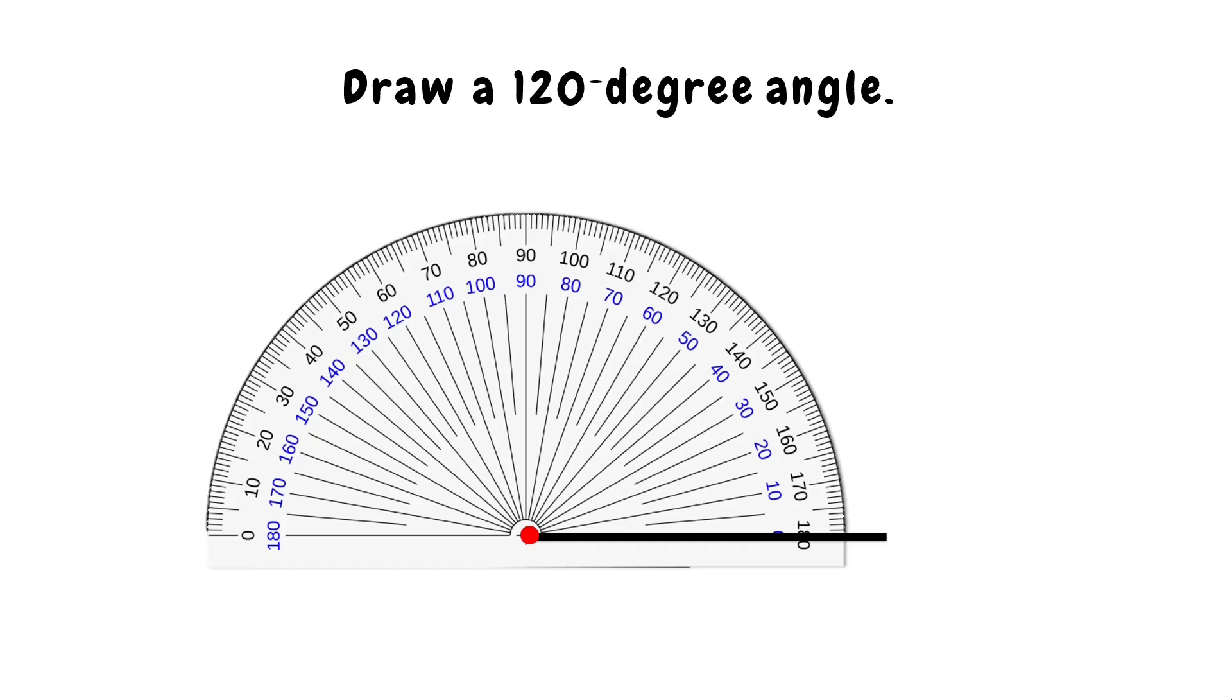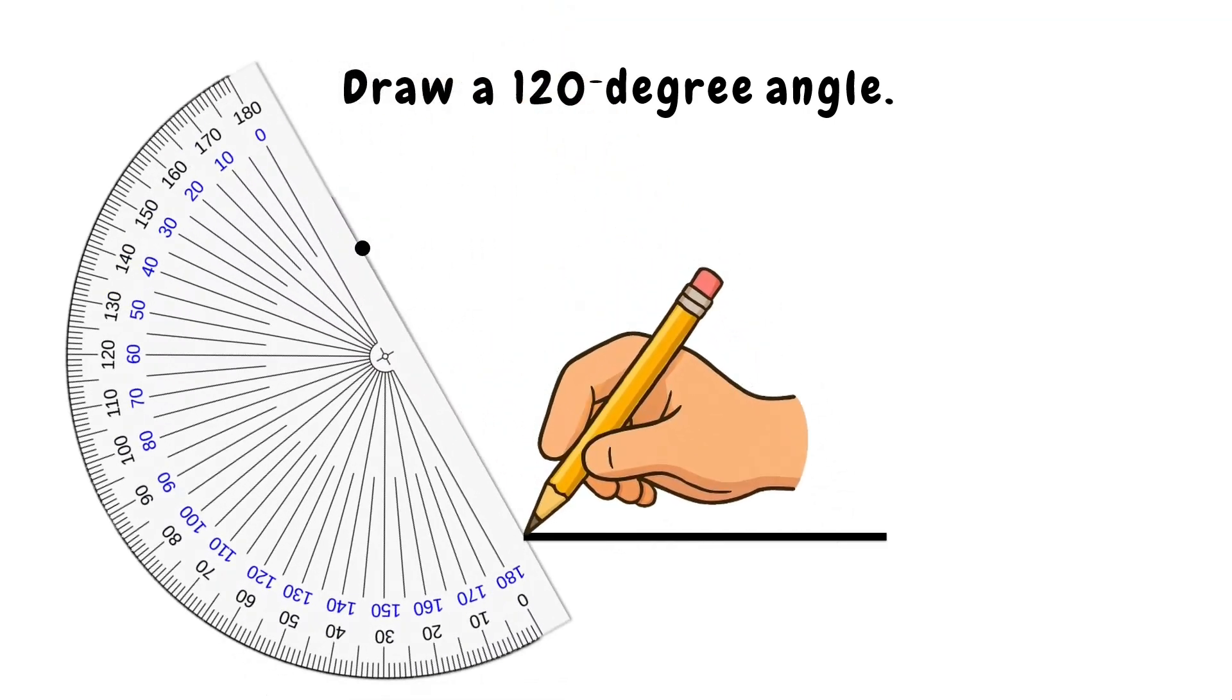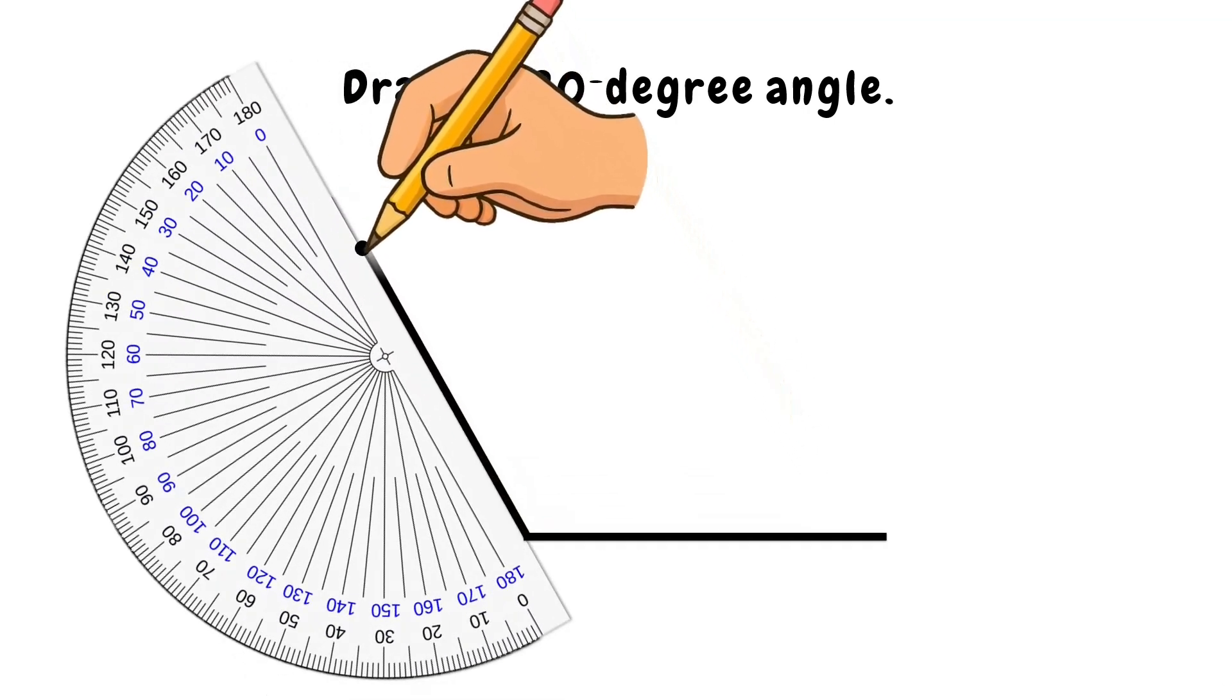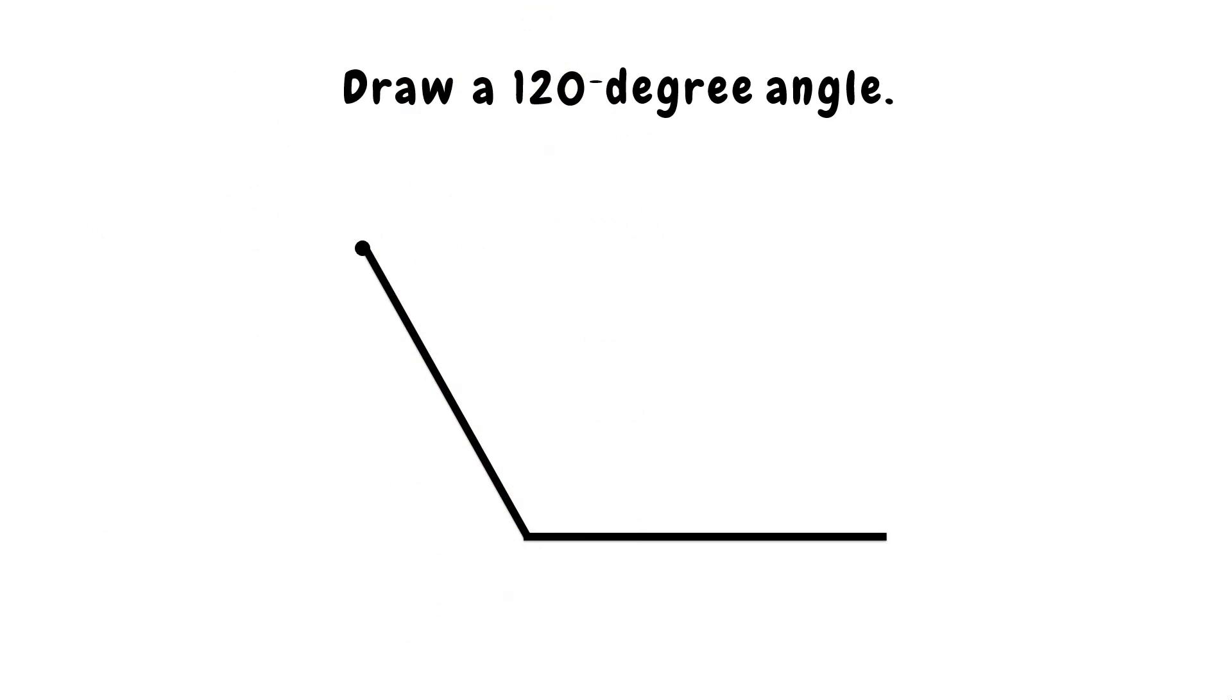Here, I am using again the inner scale. Find and mark 120 degrees. Connect the dot back to the end point. And now, you've drawn a large angle, 120 degree angle.